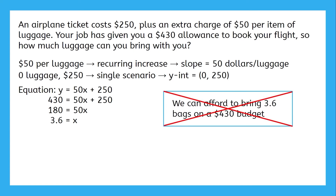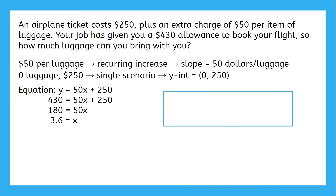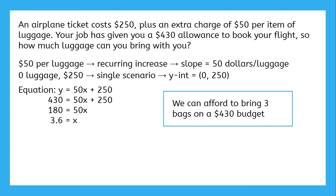Our amount of luggage has to be a whole number, but we can't afford more than 3.6 items, so 4 is impossible — our limit is three items of luggage. That 0.6 just means we aren't using all the allotted money. If you plug in 3 for x, it will only cost $400, putting us $30 below the budget.